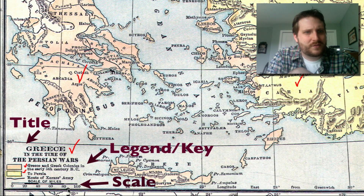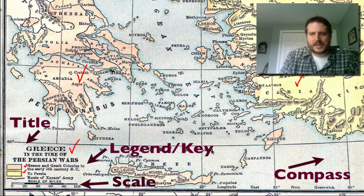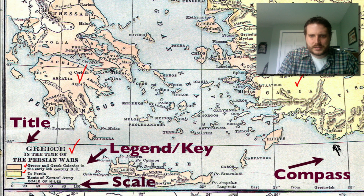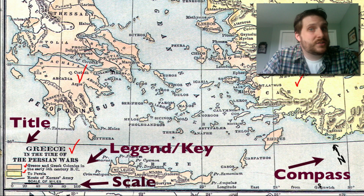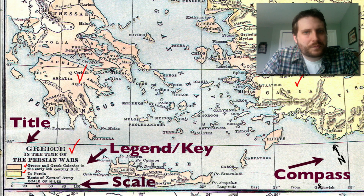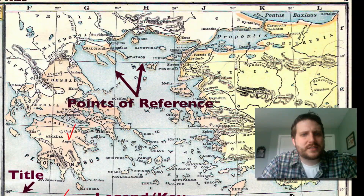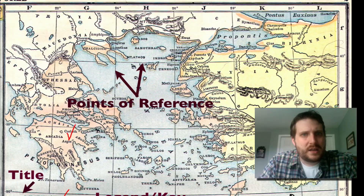The next piece of the map is the compass — I'm going to have to draw this one in because this map doesn't have one. The compass tells you which way is north. Usually on a map north is up, but sometimes it's slanted a bit, and it tells you which direction on the map is north.